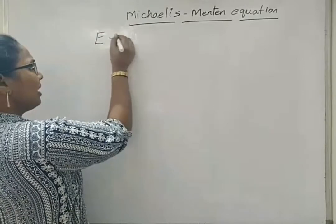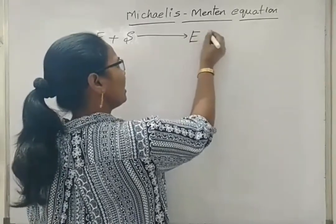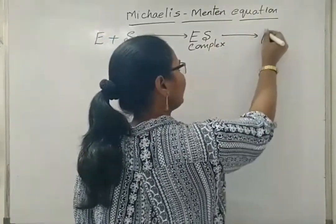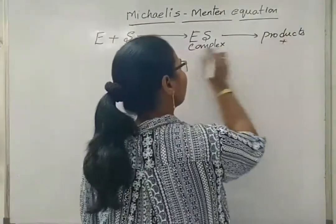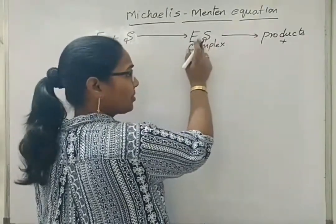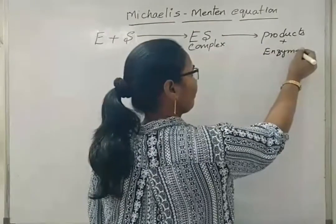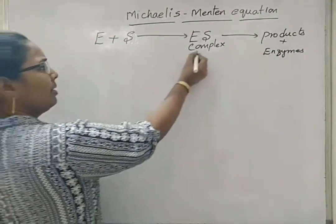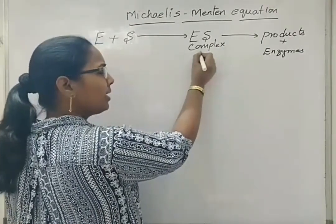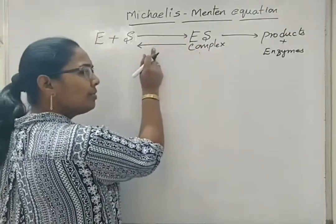Generally, we write: enzyme plus substrate gives enzyme-substrate complex, which again gives out products plus enzyme with free active sites. This enzyme-substrate complex has the nature to dissociate back into enzyme and substrate, so it is represented with a reversible arrow.